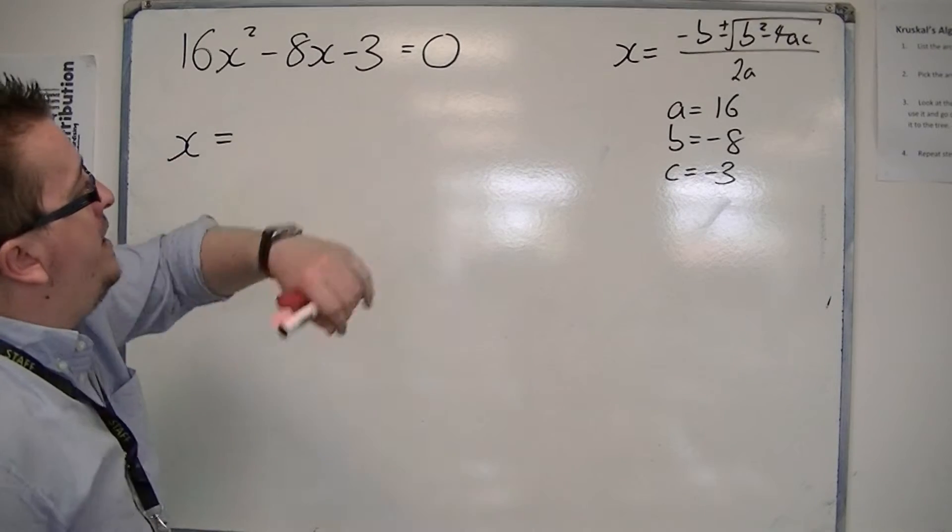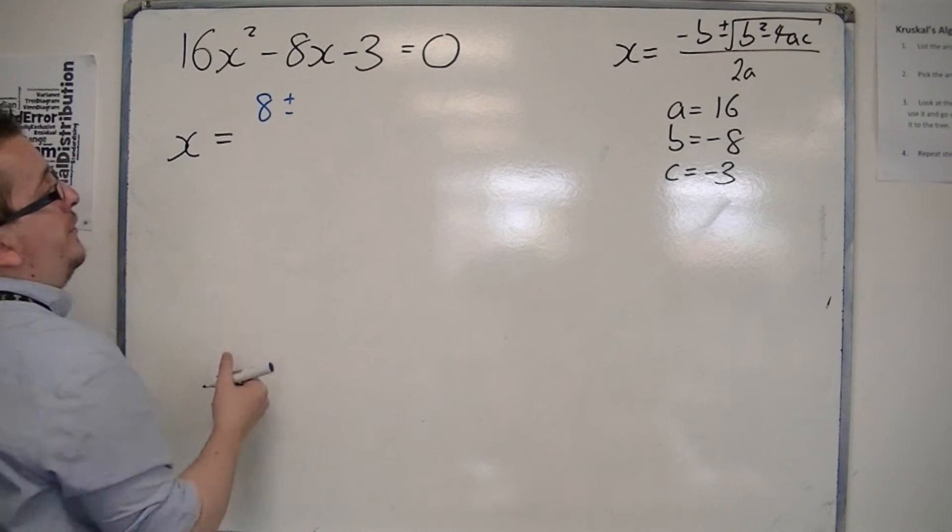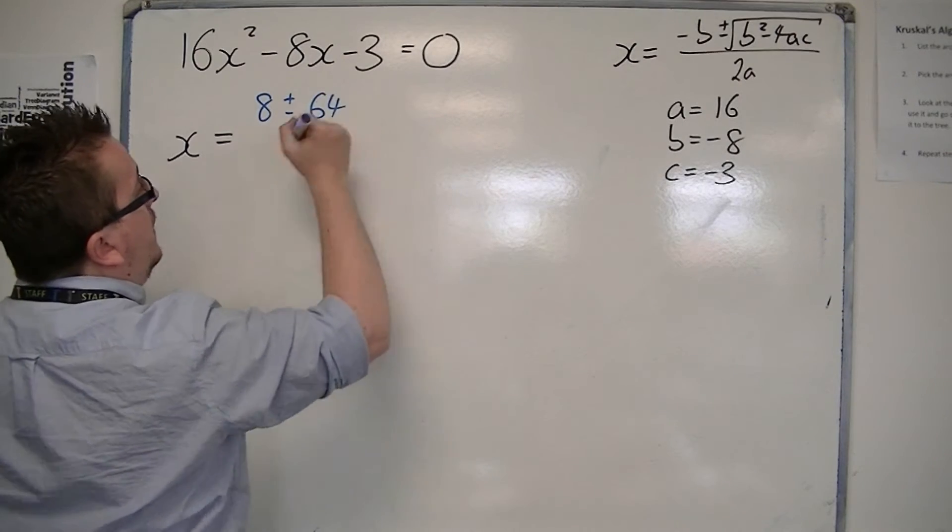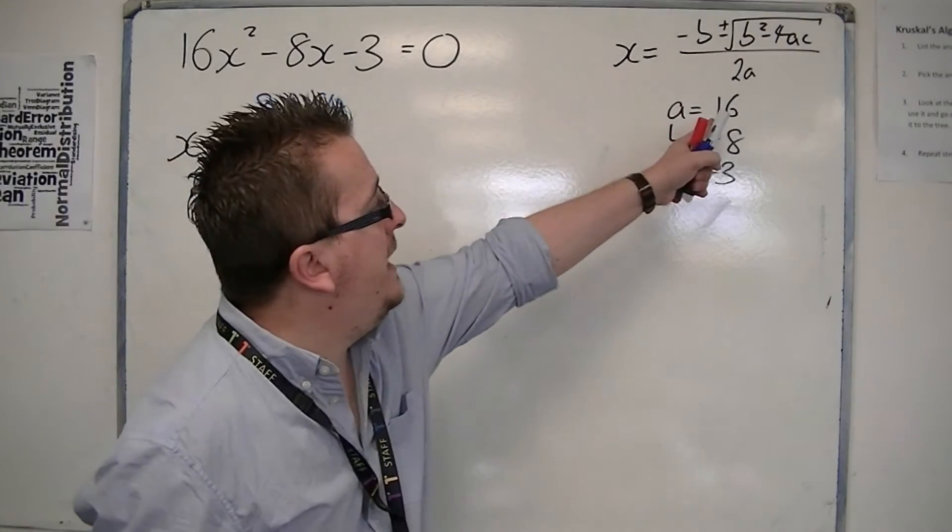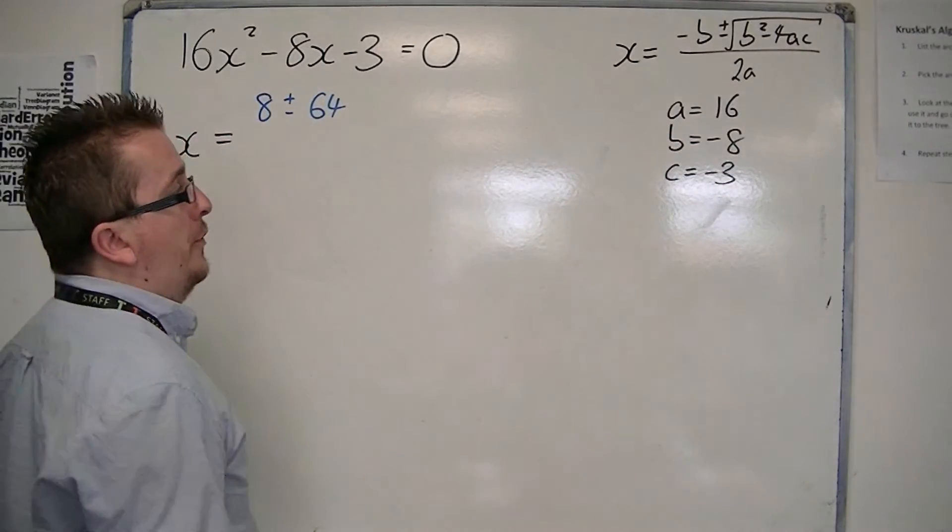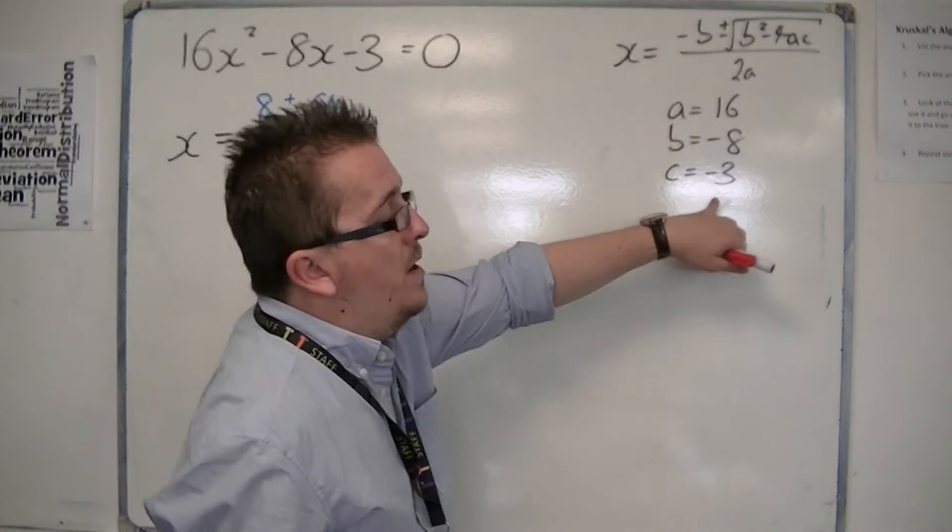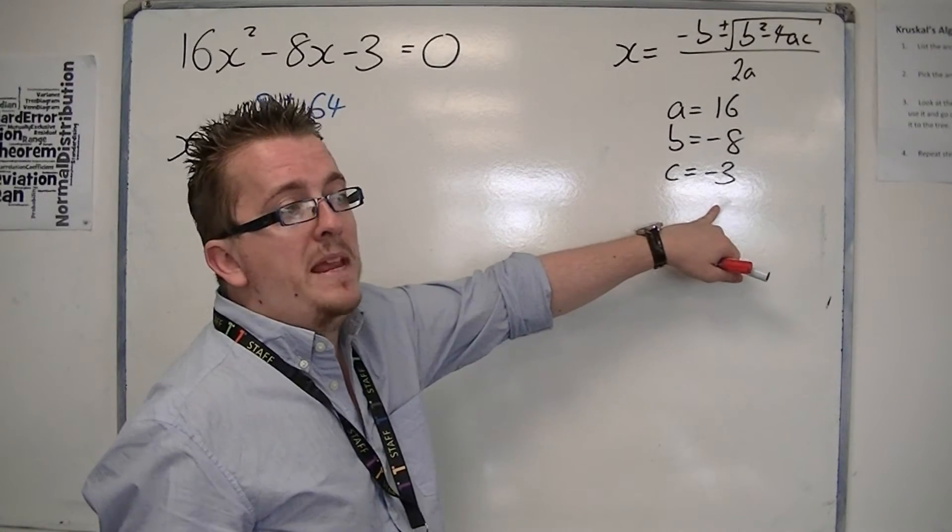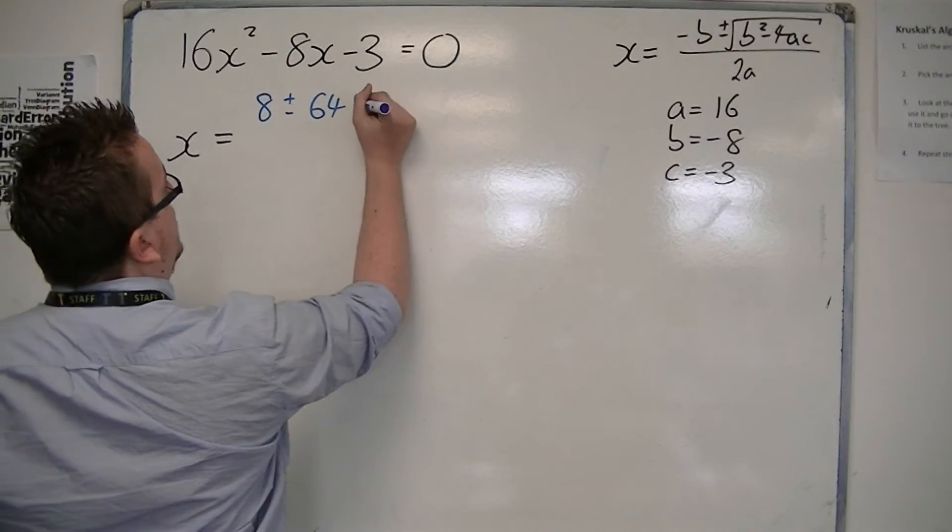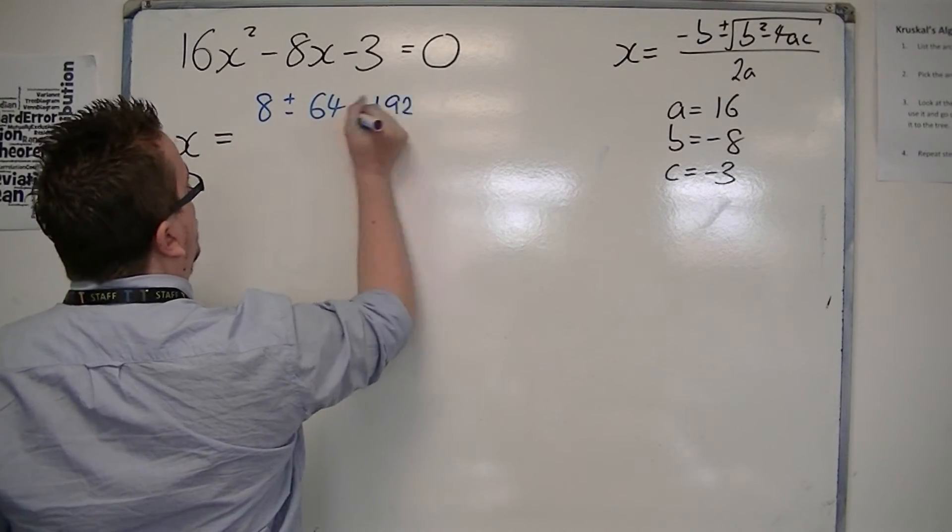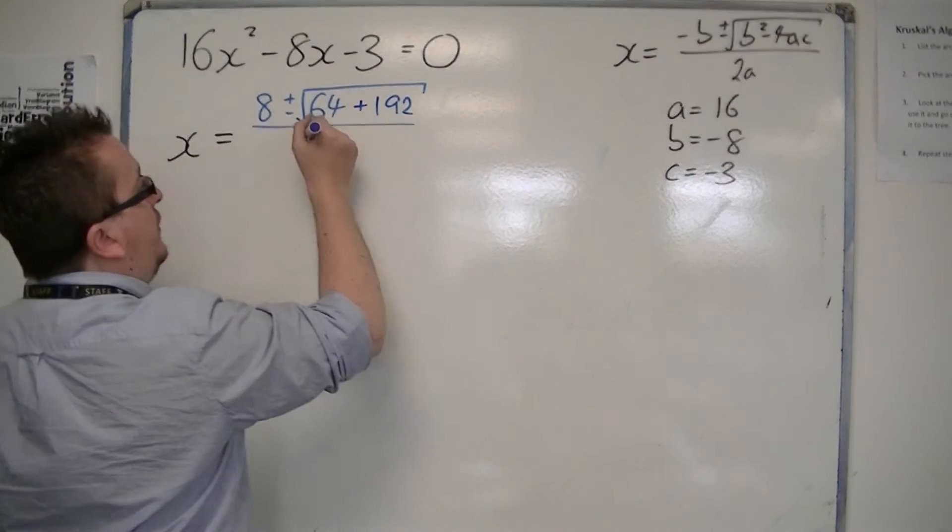So, we have minus b, so minus minus 8 is 8, plus or minus b squared, which would be 64, minus 4 lots of a times c, so 4 lots of 16 is 64, multiplied by minus 4, multiplied by minus 3 will make minus 192, so take away minus 192 will make plus 192, square rooting that, all over 2 lots of a is 32.